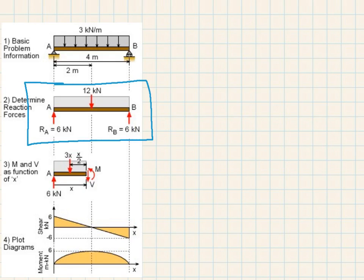So V of X, let me change the color of this. So my V of X equals the integral of W of X, DX. And this, based on this equation, my W of X is negative 3.